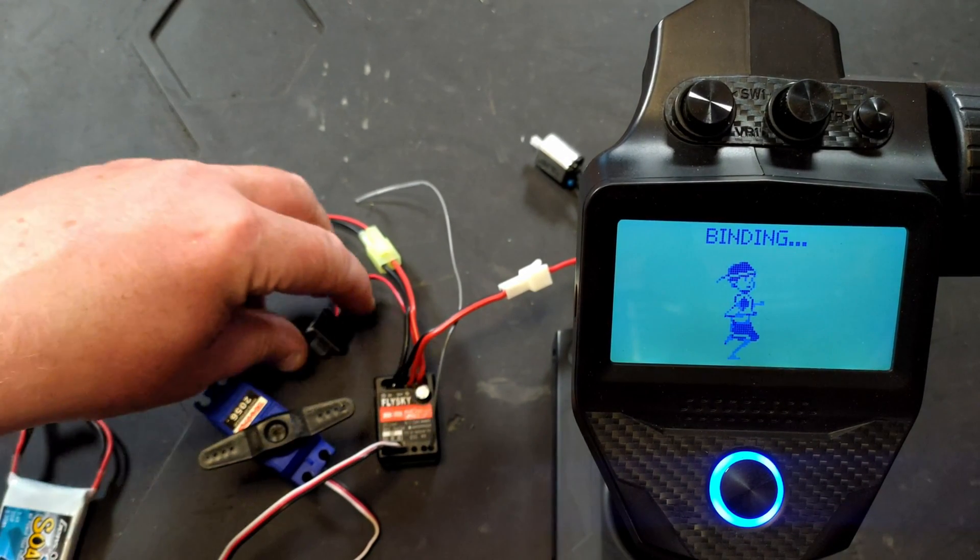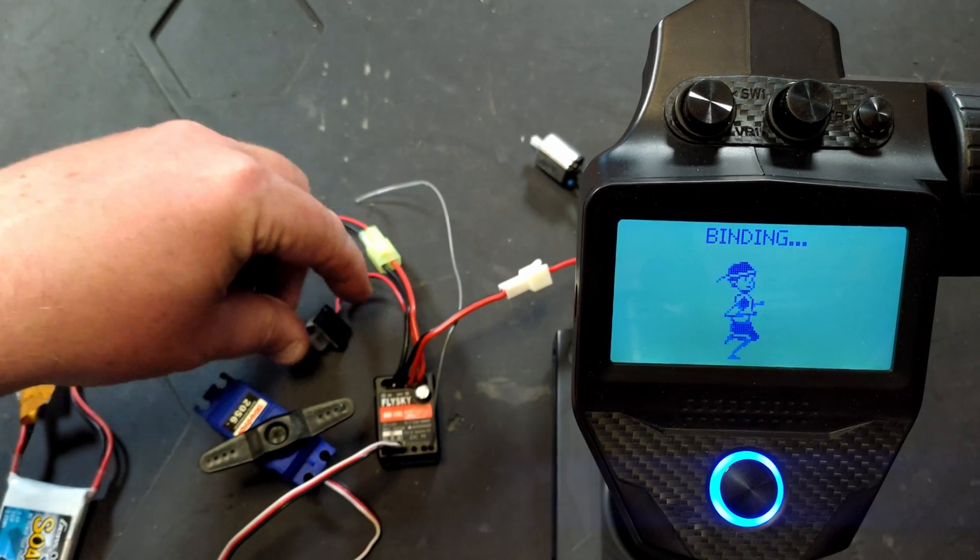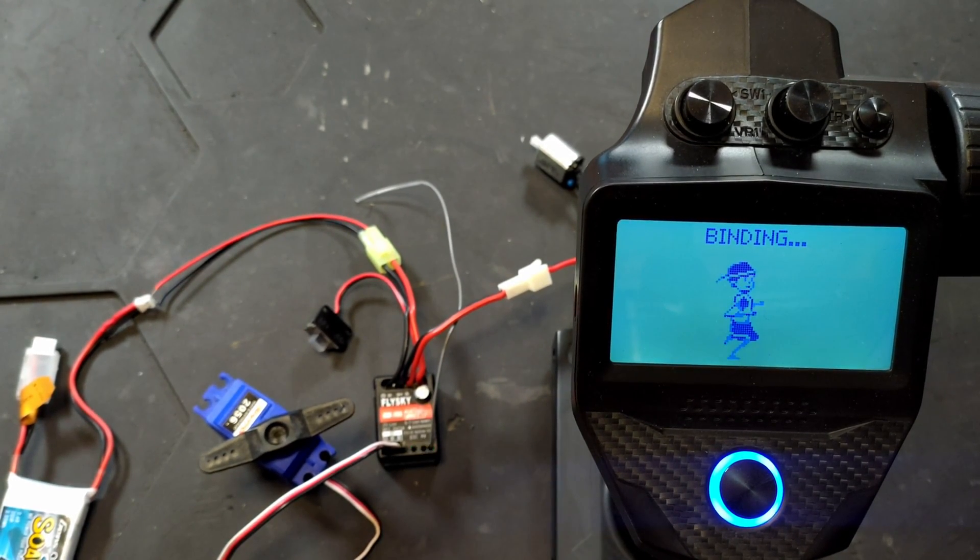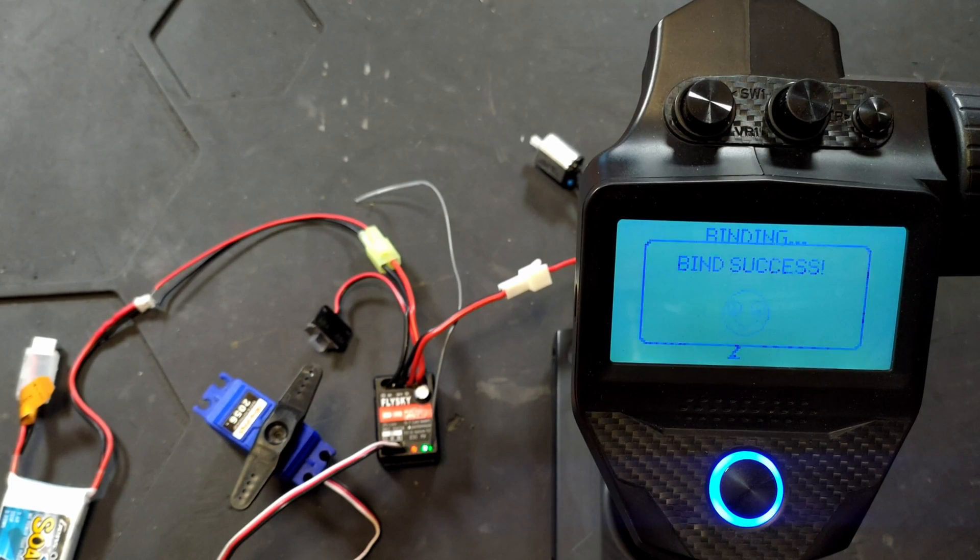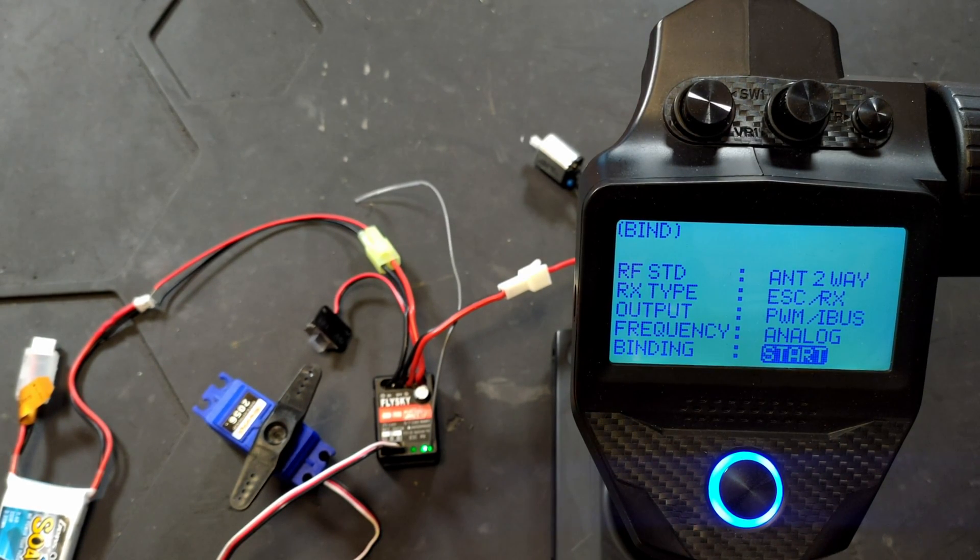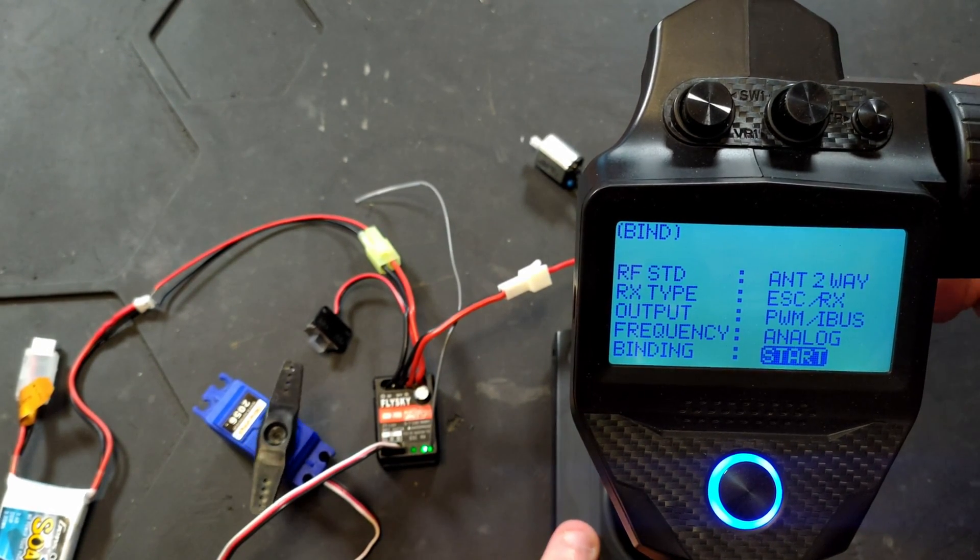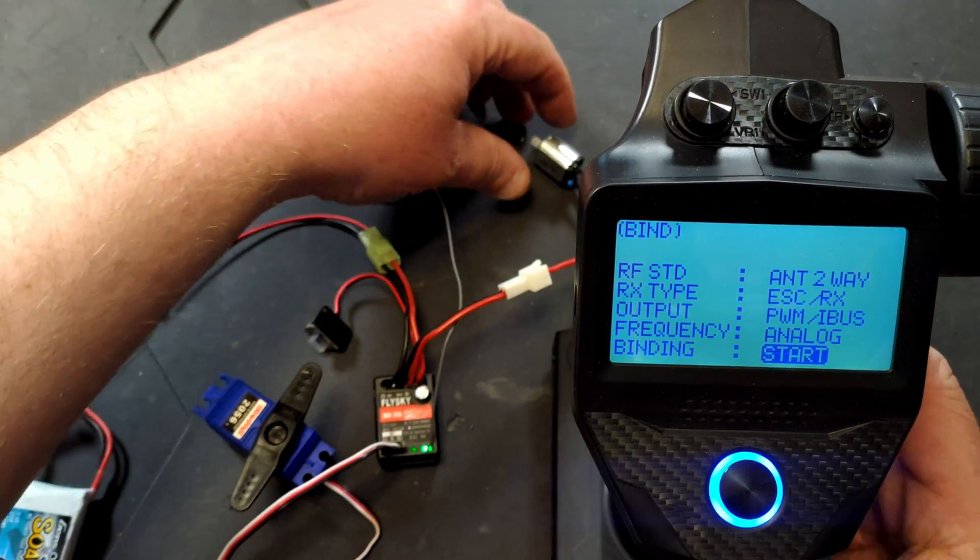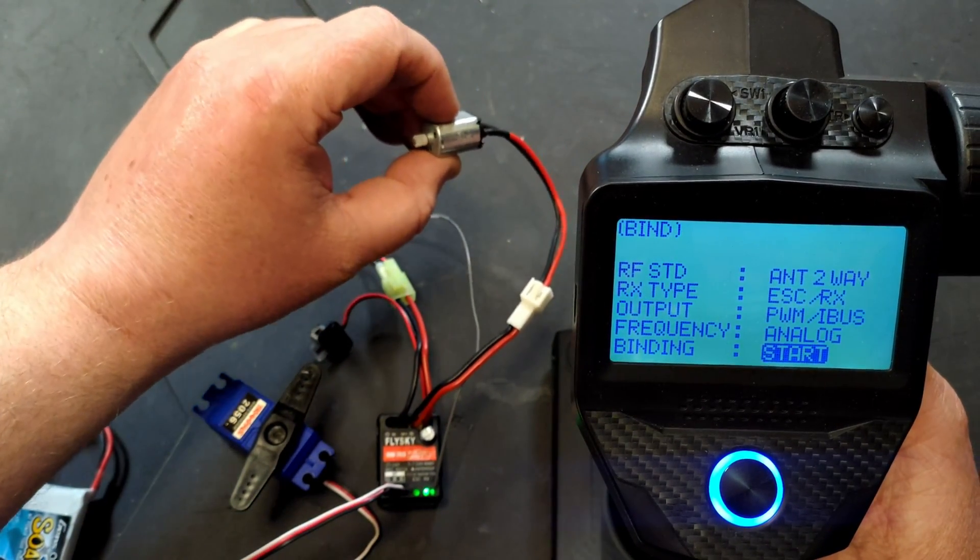Then you're going to want to go into bind. If we power it on, see the green lights flashing, you'll get the bind notification, then we've got a servo, and if I can get it in shot...